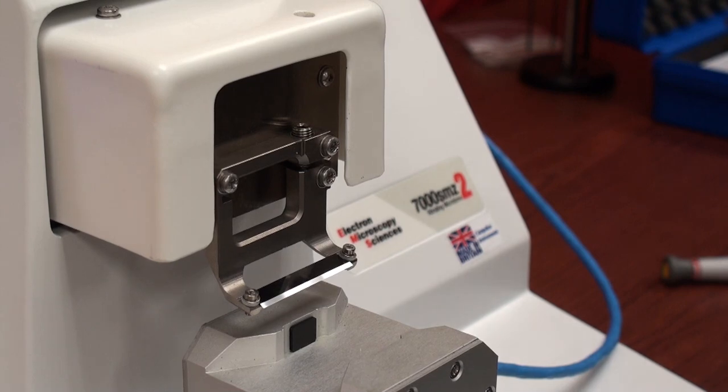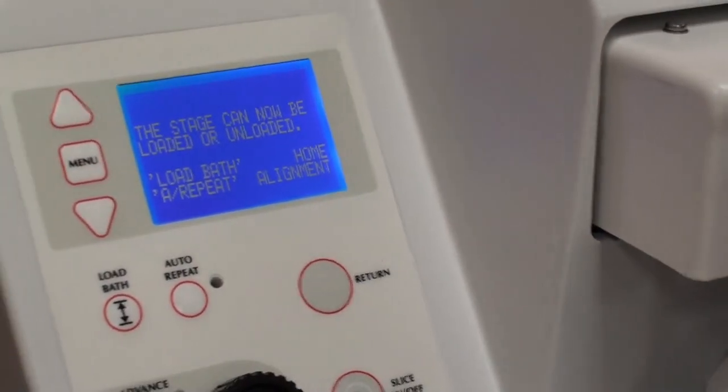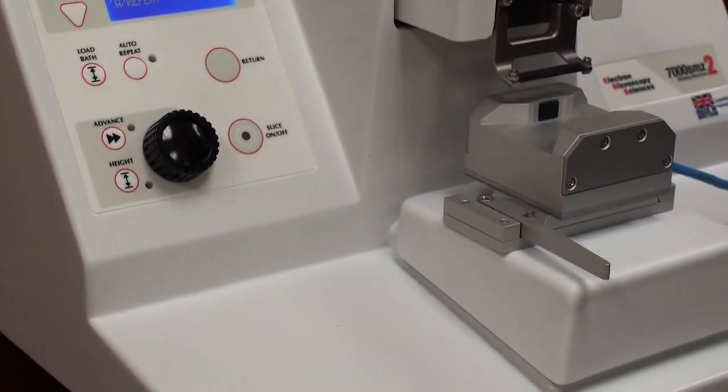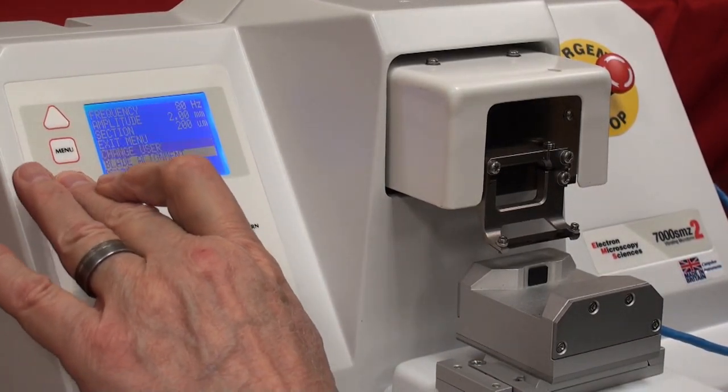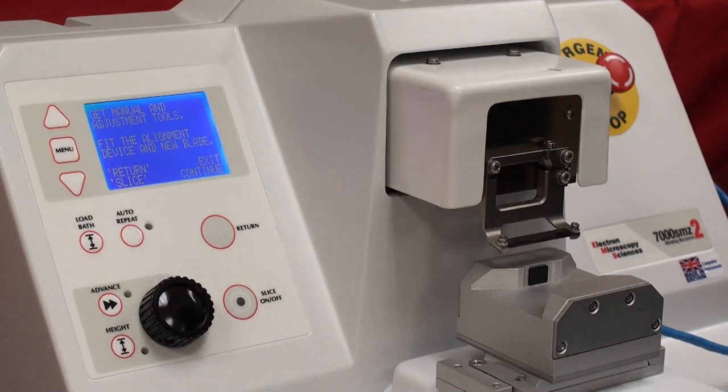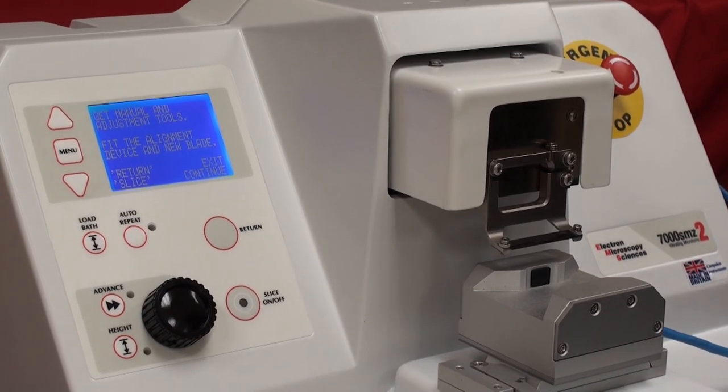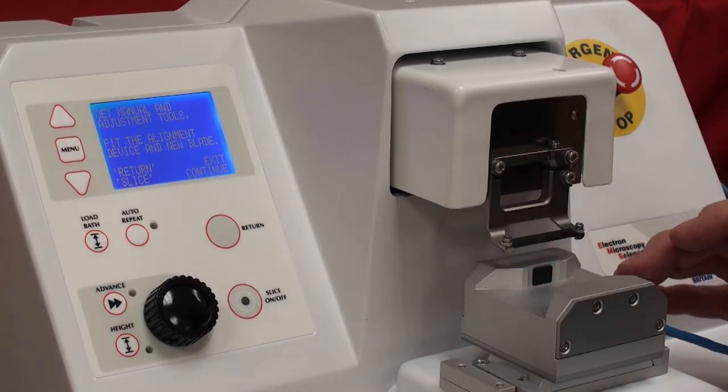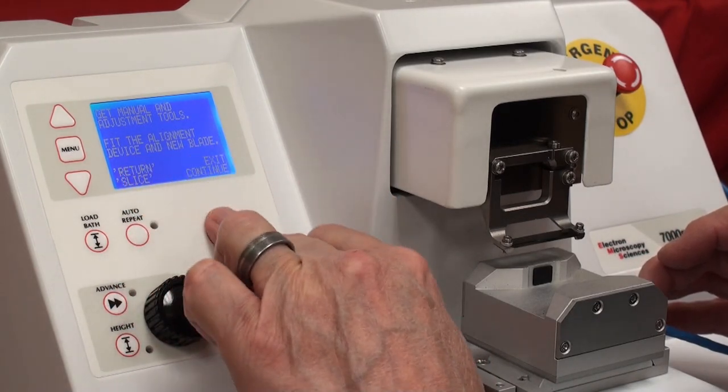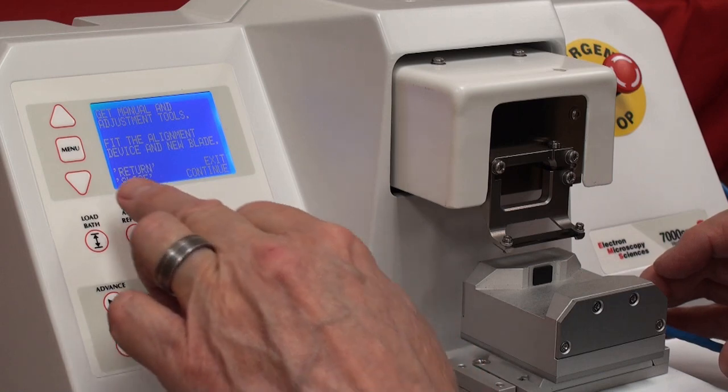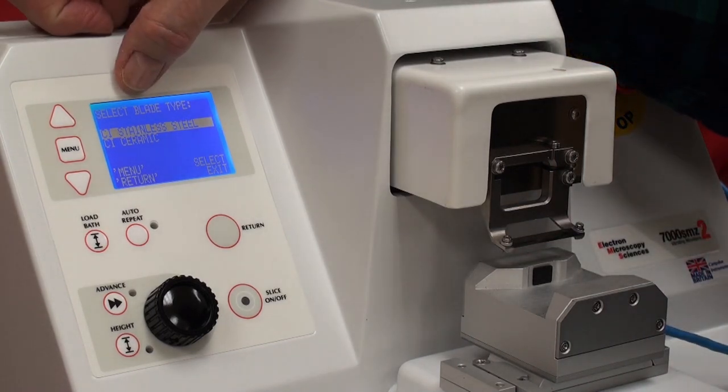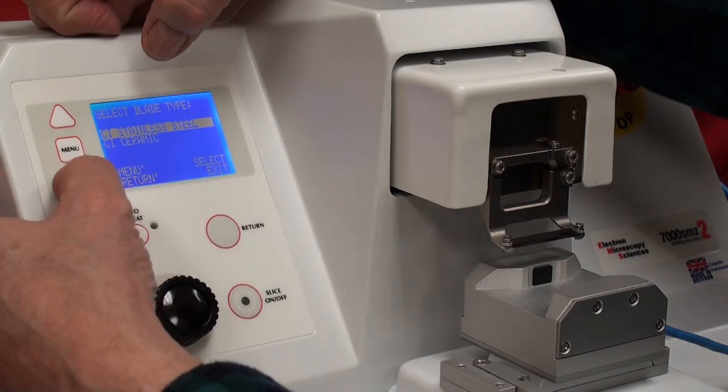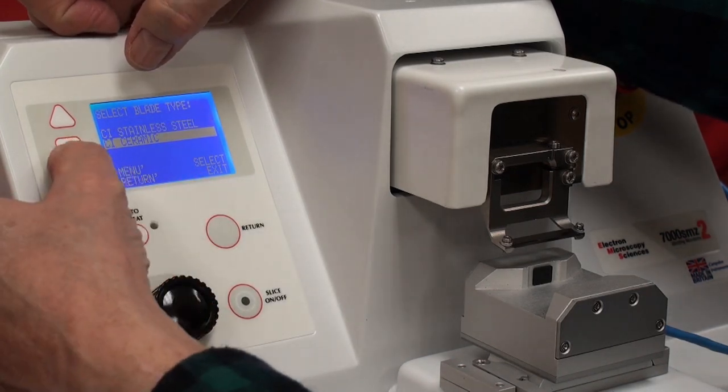Select blade alignment. Let me move this back. Let's go back to menu. Select blade alignment. Enter. Get the manual and adjustment tools. Fit the alignment device in a new blade, which I've done. Return. If you press Return, it'll exit you from this operation. Or if you hit Slice, it will continue. It asks you what kind of blade that you put in there. A stainless steel blade or a ceramic blade. In this case, I put a ceramic blade in. Hit Enter.